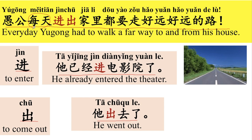都要走好远好远的路。每 goes with 都. 每天都。For example, 他每天都锻炼身体，He exercises everyday. 走 means to walk. 远 means far. 好远就是very far. 好远好远的路就是很远很远的路。那我们再来读一遍：愚公每天进出家里，都要走好远好远的路。